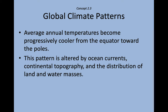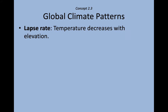Generally, average annual temperatures become progressively cooler as you move away from the equator. This pattern is dictated and altered by ocean currents, but also by continental topography — things like elevation — and the distribution of land masses and water masses, meaning how much land there is relative to how much water is present in a given area.